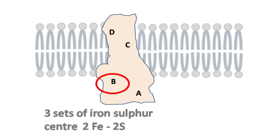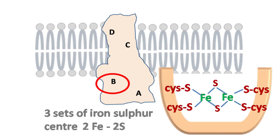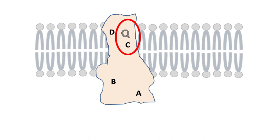Subunit B has three sets of iron-sulfur centers — 2Fe2S, meaning there are two iron ions present in the protein. Subunit C contains a ubiquinone molecule.